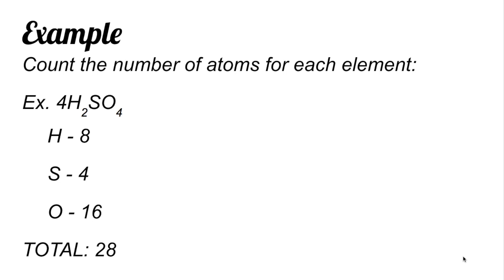These are the things you need to remember when counting the number of atoms in a compound: check the subscript — it should only be applied to the element to its left. The coefficient is applied to everything, to all the elements in your compound. And if they are enclosed in parentheses, make sure you also multiply by the subscript outside the parentheses. That's it for today. Happy learning.